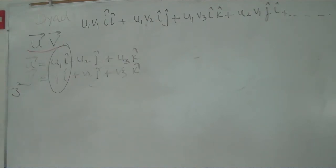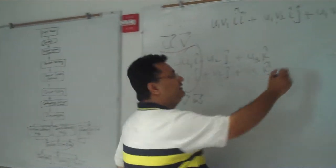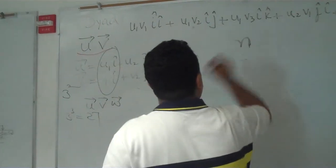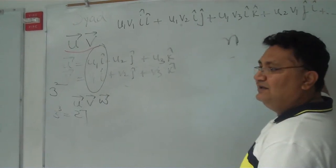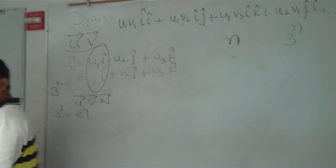What about triad? Triad will be represented like u, v, w. Components you know, three cube, that is 27. And if a tensor is having rank n, how many components will be there? Three to power n.